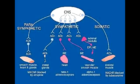Name the neurotransmitter that is used by the preganglionic nerve fibers in the sympathetic and parasympathetic divisions. The preganglionic nerve fibers use acetylcholine as their neurotransmitter.